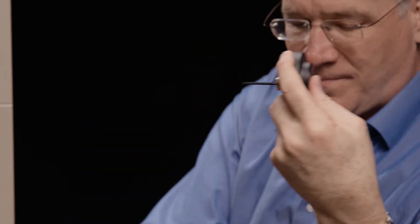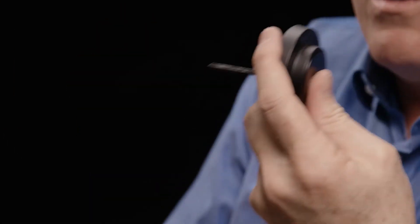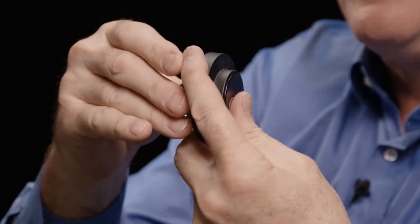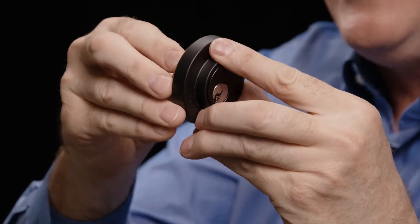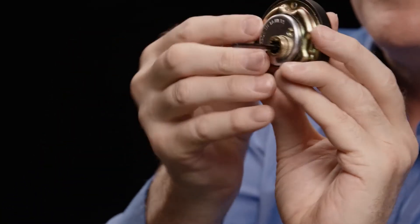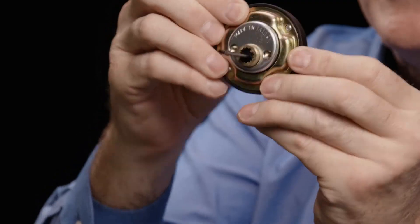The next step is there's an inner trim ring which simply slides over the inside and rotates until it drops onto some pins. It's now held firmly in place. So this is now ready to be installed on the door.